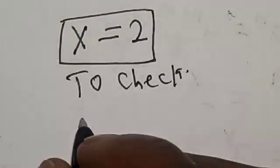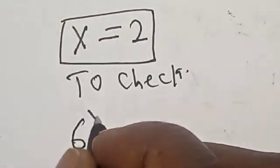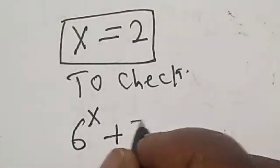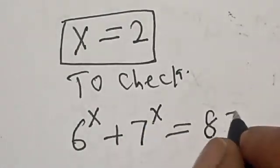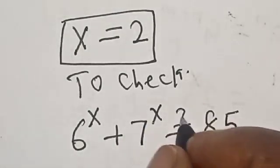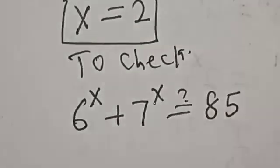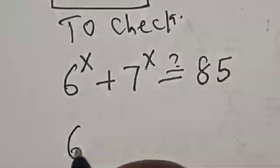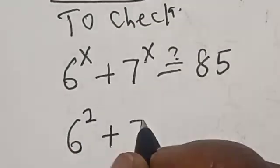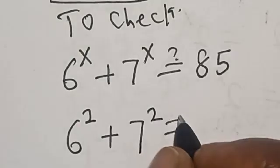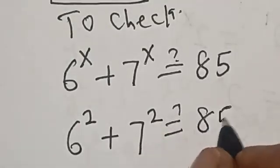We have 6 raised to power x plus 7 raised to power x must be equal to 85. Now at x is equal to 2, we have 6 square plus 7 square must be equal to 85.